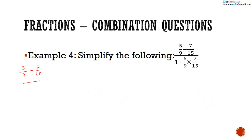We express both over the same denominator. What's the LCM of 9 and 15? Using prime factors: 3 goes into both 9 and 15. 3 into 9 is 3, 3 into 15 is 5. 3 into 3 is 1, 3 cannot go into 5 exactly, so write back 5. 5 into 1, 5 into 5 is 1. 3 multiplied by 3 is 9, and 9 multiplied by 5 is 45. So the LCM is 45.